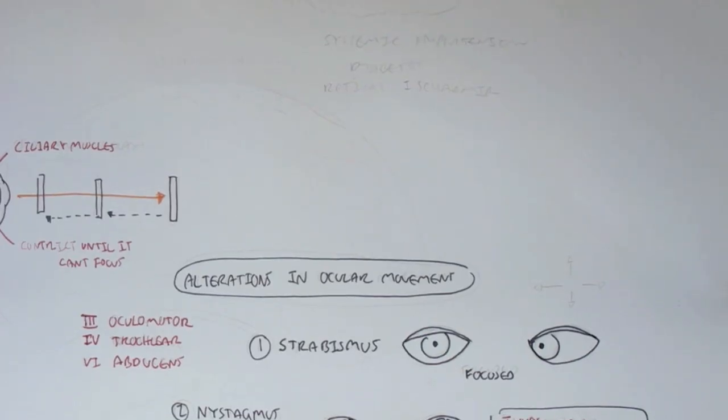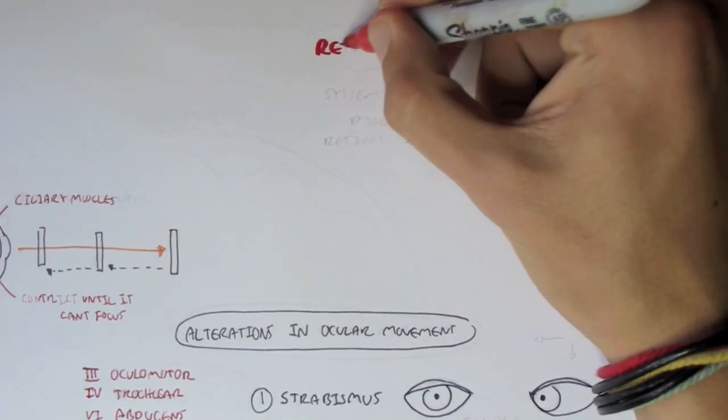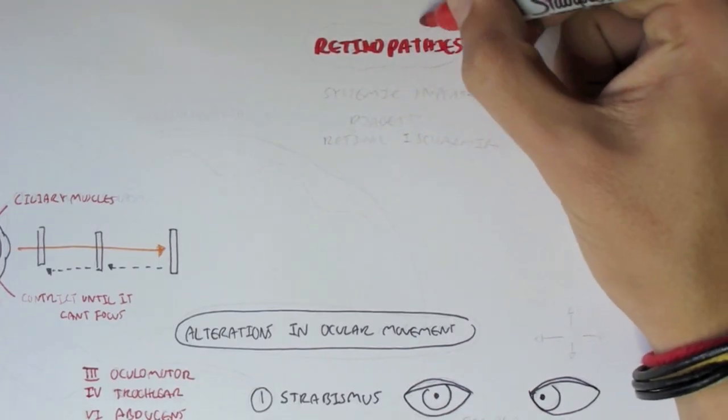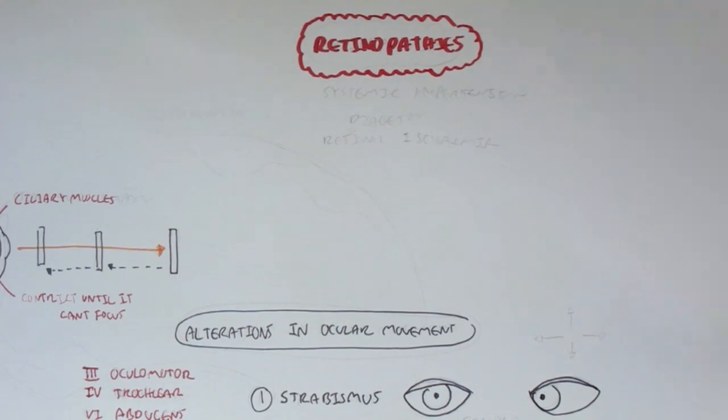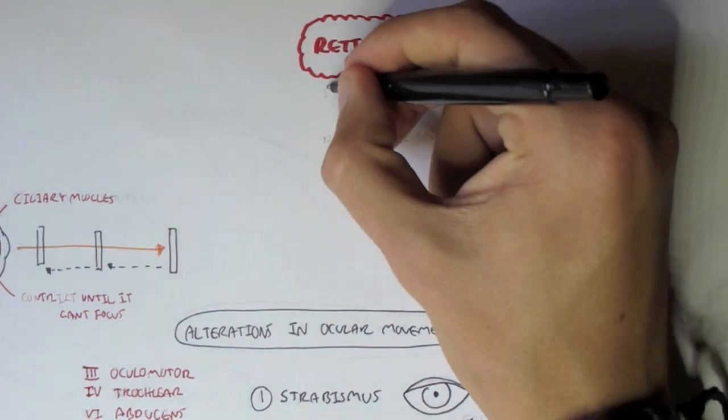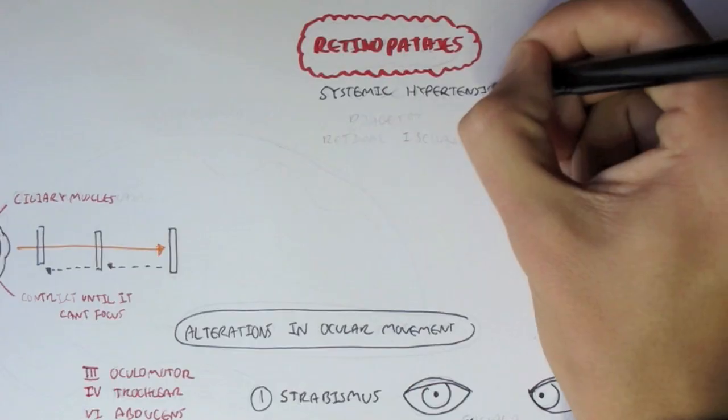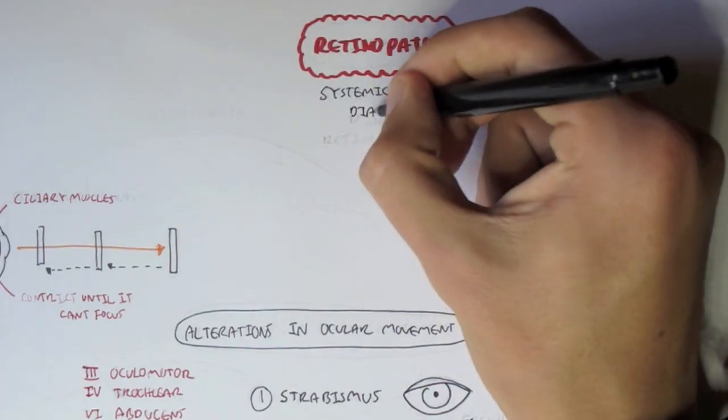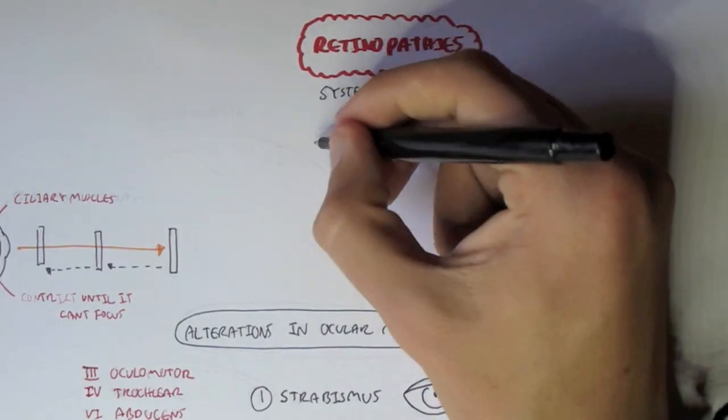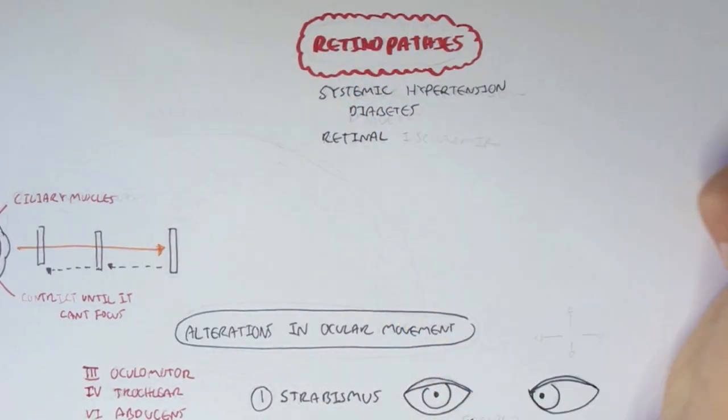The last thing I want to talk about is retinopathies. And there are many retinopathies caused by other conditions, such as systemic hypertension, diabetes, and retinal ischemia. And these are only some.